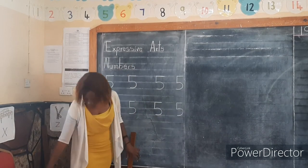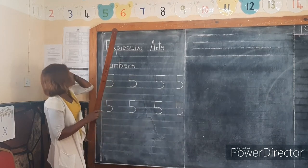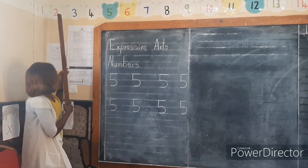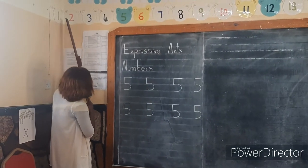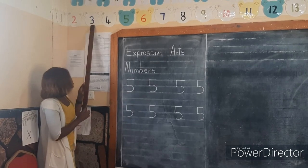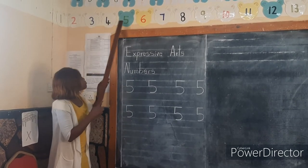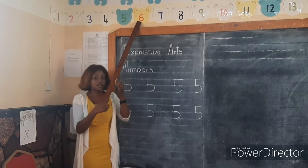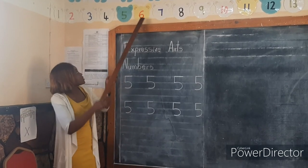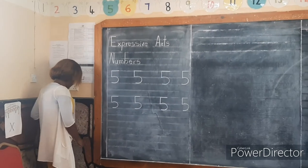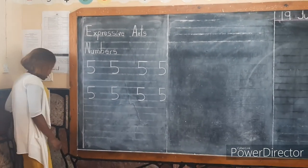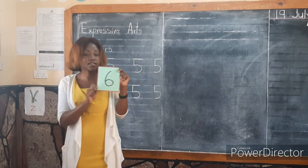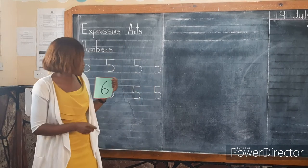We are going to look at another number. I want us to count from here until we reach the number I want us to look at. Let's count together: 1, 2, 3, 4, 5, 6. This one here is number 6. Number 6. How do we write number 6? How do we write this number 6 that I am having in my hands?